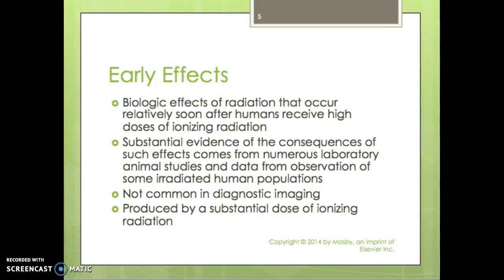Early effects of radiation are the biological effects that occur relatively soon after humans receive a high dose of ionizing radiation. In this lecture we're only going to talk about the early effects; the next lecture will be on the late effects of biological changes within the body. Substantial evidence of these effects comes from numerous laboratory animal studies and data from observation of irradiated human populations, such as those exposed at Chernobyl and other radiation accidents. In diagnostic imaging, doses aren't typically high enough to cause early effects, though some cath lab procedures can cause skin changes. In order to have early effects, you must have a substantial dose of ionizing radiation.